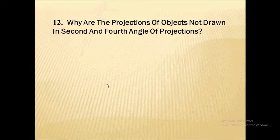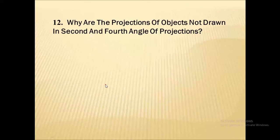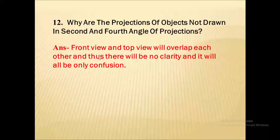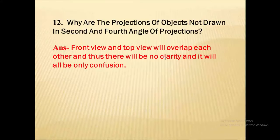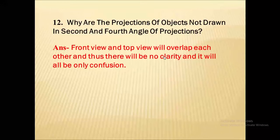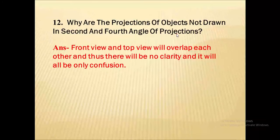Twelfth, why are the projections of objects not drawn in second and fourth angle projection? The reason is that front view and top view will overlap each other. Thus there will be no clarity and it will create only confusion. Hence we are not using second and fourth angle of projection.